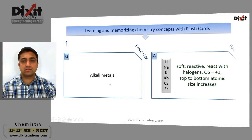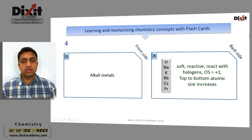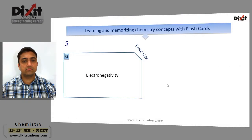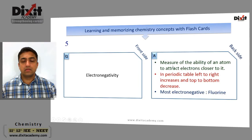Alkali metals: they are soft and reactive, they react with halogens, and the common oxidation state shown by alkali metals is +1. From top to bottom, atomic size increases. Examples of alkali metals: lithium, sodium, potassium, rubidium, cesium, and francium.